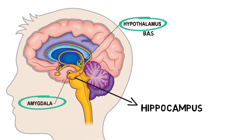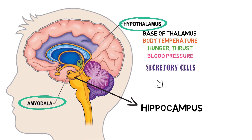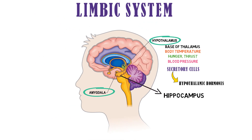The hypothalamus lies at the base of the thalamus. The hypothalamus contains a number of centers which control body temperature, hunger, thirst and blood pressure. The secretory cells of the hypothalamus secrete hormones called hypothalamic hormones.